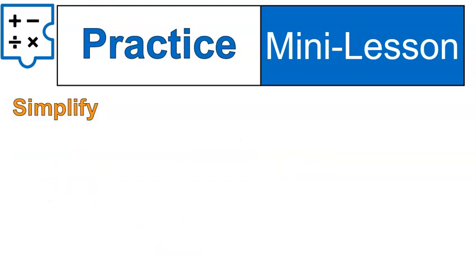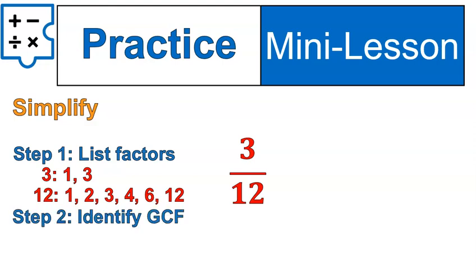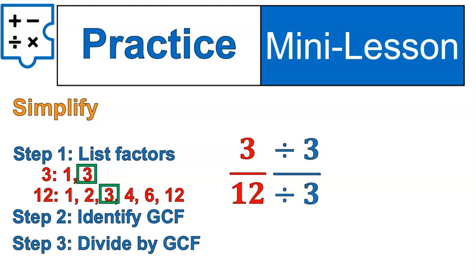All right, try this practice. I want you to simplify 3 over 12. I promise you this one has a greatest common factor other than 1. Go ahead and try that out and then resume the recording for me to show you the steps. Step 1, list the factors. 3 has a factor of 1 and 3. 12 has a factor of 1, 2, 3, 4, 6, 12. The greatest common factor in this case is 3. So we're going to divide the fraction top and bottom by 3 to get our fraction in lowest terms, 1 fourth.